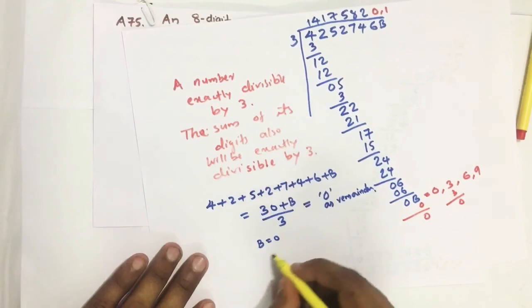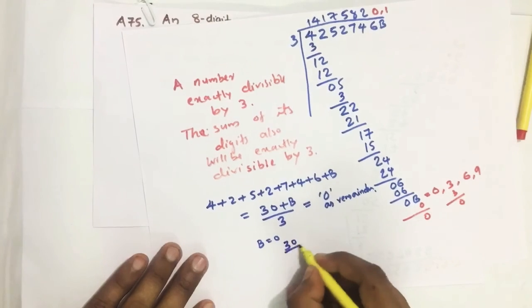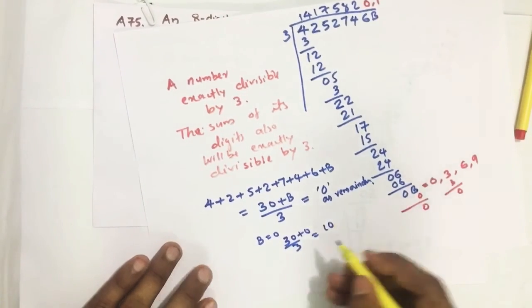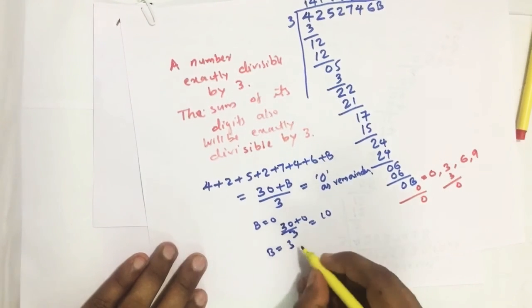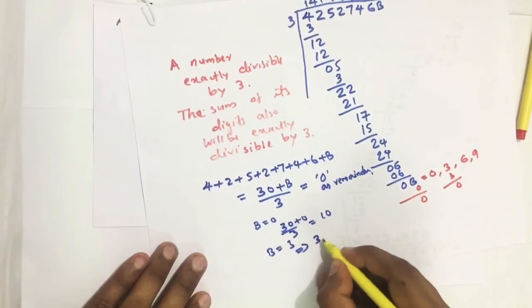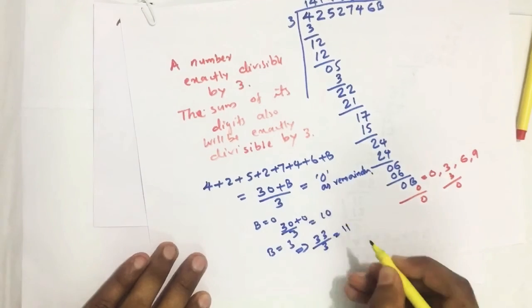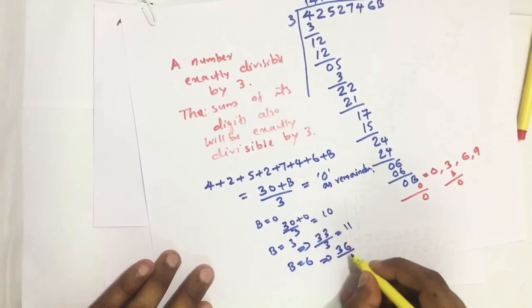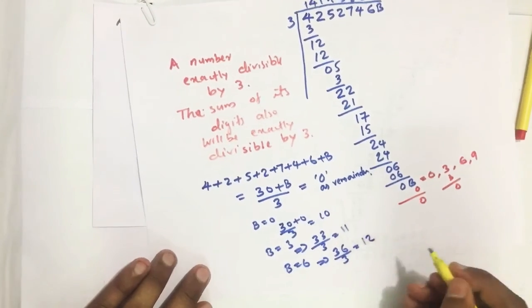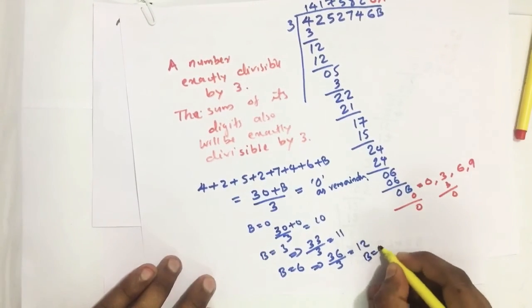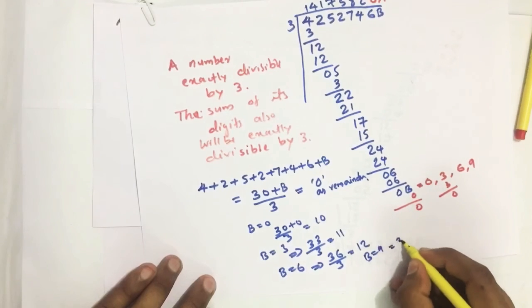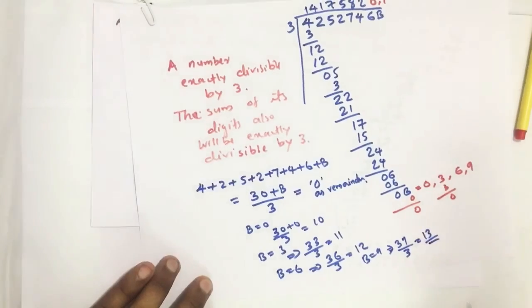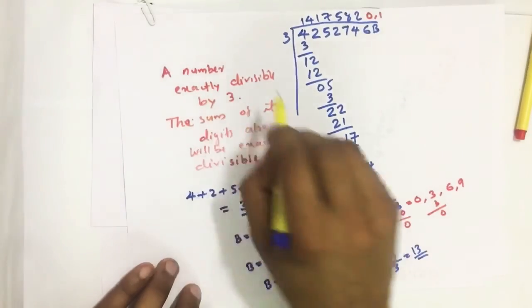If B equals 0, then 30 plus 0 equals 30, divided by 3 equals 10 with remainder 0. If B equals 3, we get 33 divided by 3 equals 11. Similarly, B equals 6 gives 36 divided by 3 equals 12. B equals 9 gives 39 divided by 3 equals 13.